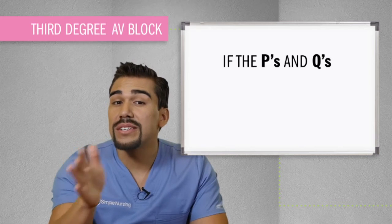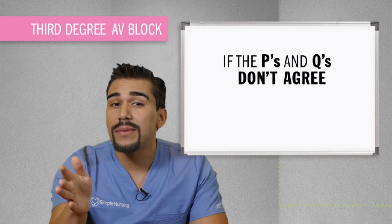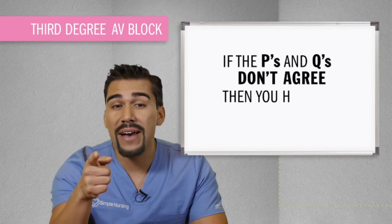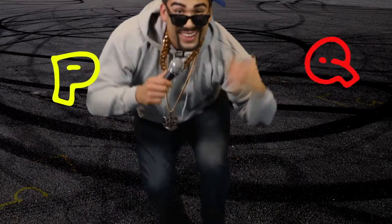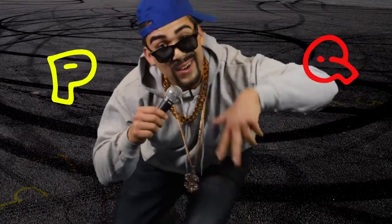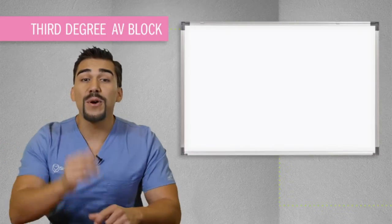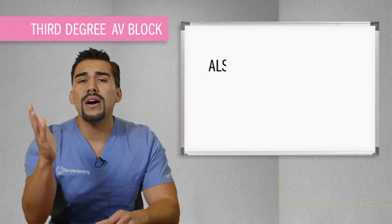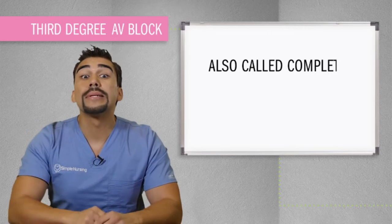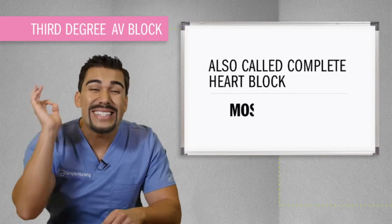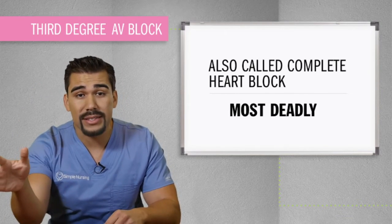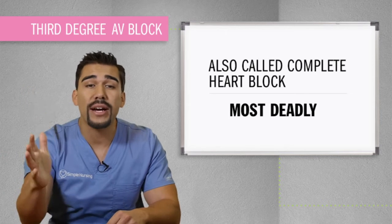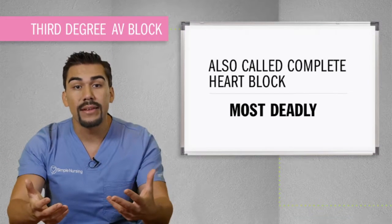If the P's and Q's don't agree, then you have that third degree. Third degree block, also known as complete heart block, is the most deadly of all AV blocks, leading to cardiac arrest and ultimately death.